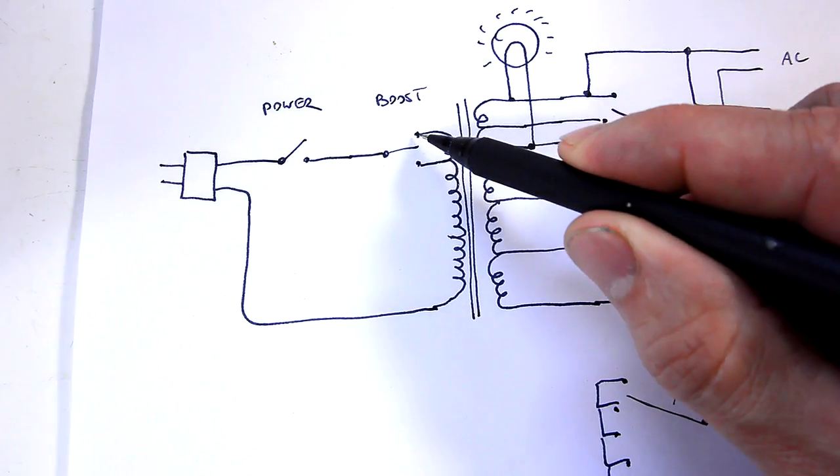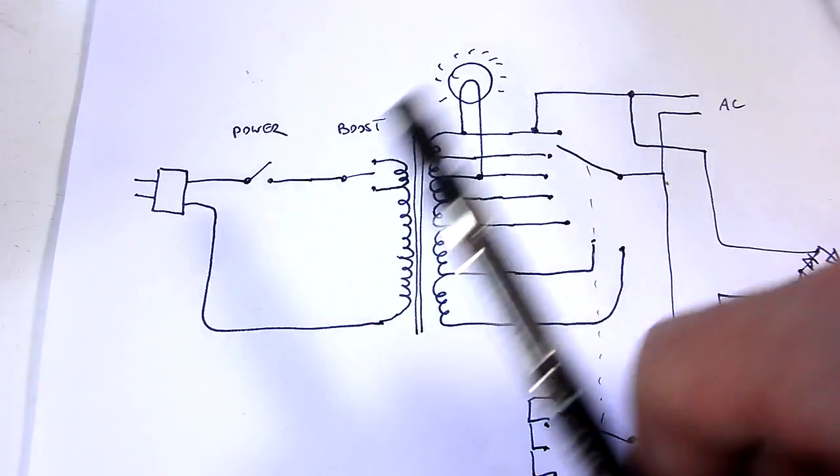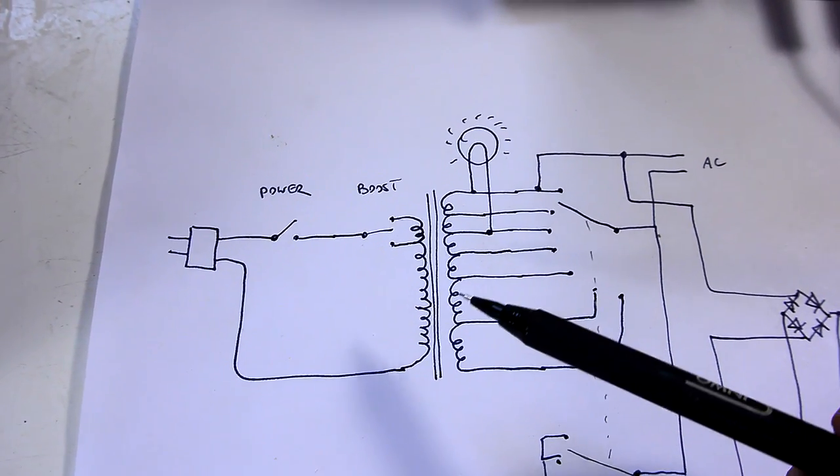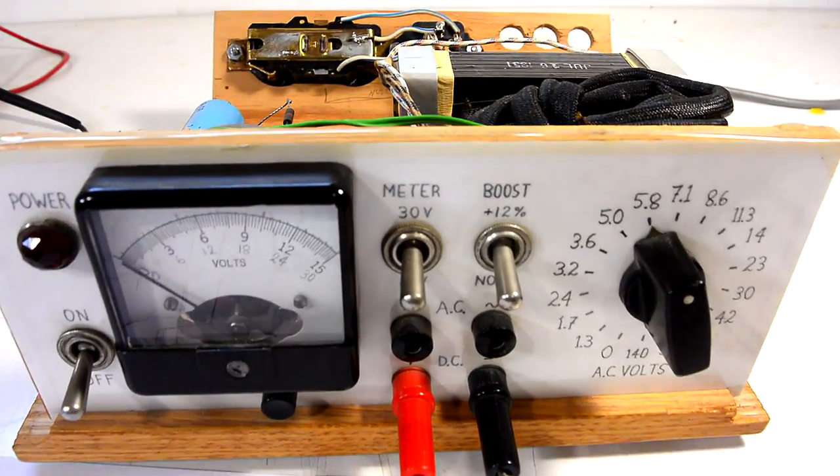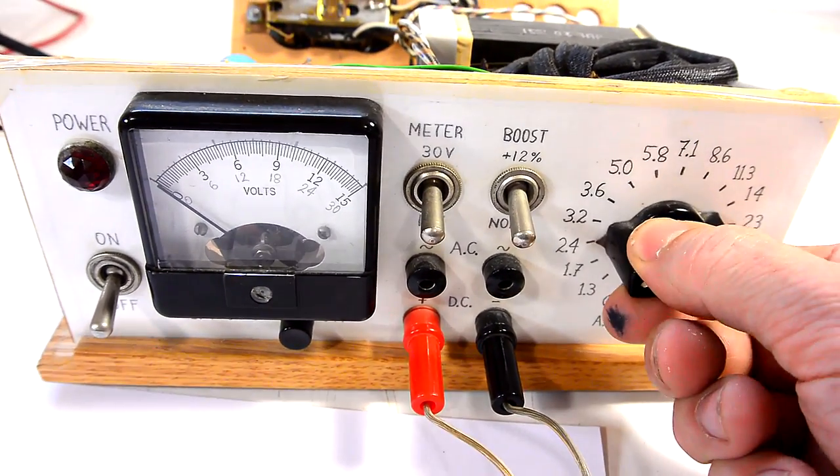In the original tube tester there used to be a rheostat between those and an adjustable knob, and you could use that to compensate for slight differences in the line voltage because they didn't have voltage regulators back then. I thought this would be useful just to get more options in terms of how many voltages I can pick because I only have fixed intervals.